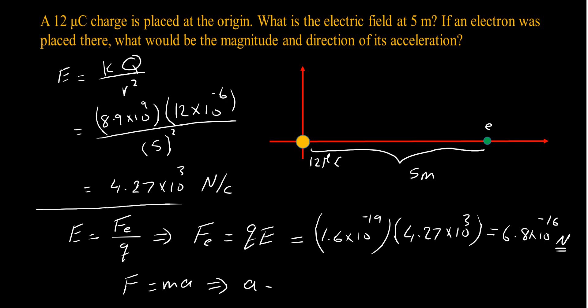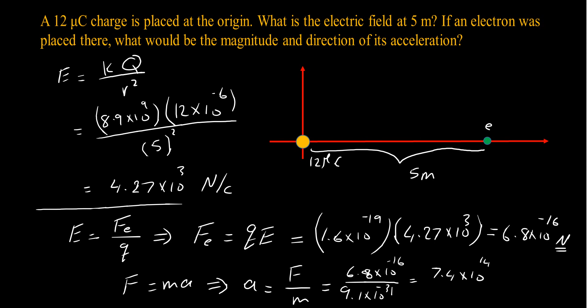Now applying Newton's second law, force equals ma, the acceleration equals force divided by mass. The force is 6.8×10⁻¹⁶ newtons and the mass of the electron is 9.1×10⁻³¹ kilograms. That gives an acceleration of 7.4×10¹⁴ meters per second squared. I hope you found it useful and we'll see you in another video — thank you.